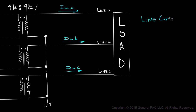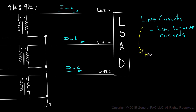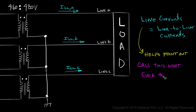We have decided to call our line currents by the name line-to-line current. It may sound misleading, but it helps to point out clearly that we are talking about the actual line currents for a particular line. So if labeling this current as line current or some other name helps you, by all means do so. As long as we clearly define our variables, we should be alright.